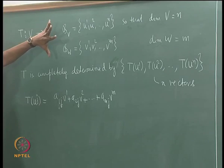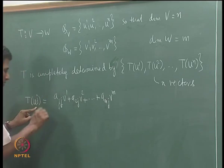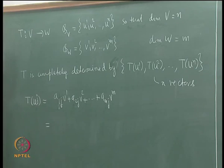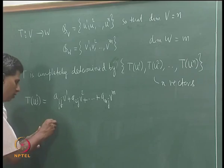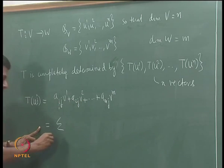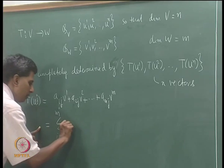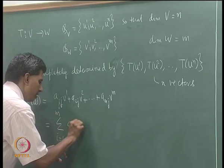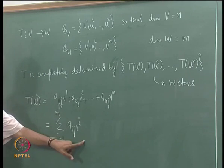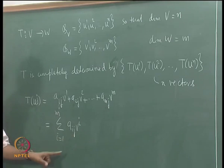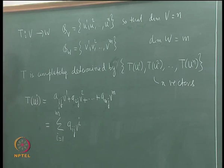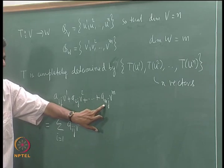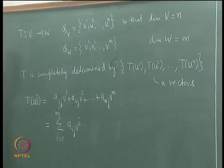These numbers a_{1j}, a_{2j}, ..., a_{mj} are unique for T(u_j). The summation notation is: T(u_j) = Σ_{i=1}^{m} a_{ij} v_i, where i is the running index and j is the free index corresponding to T(u_j). In other words, T(u1) = a_{11}v1 + a_{21}v2 + ... + a_{m1}vm, and so on.